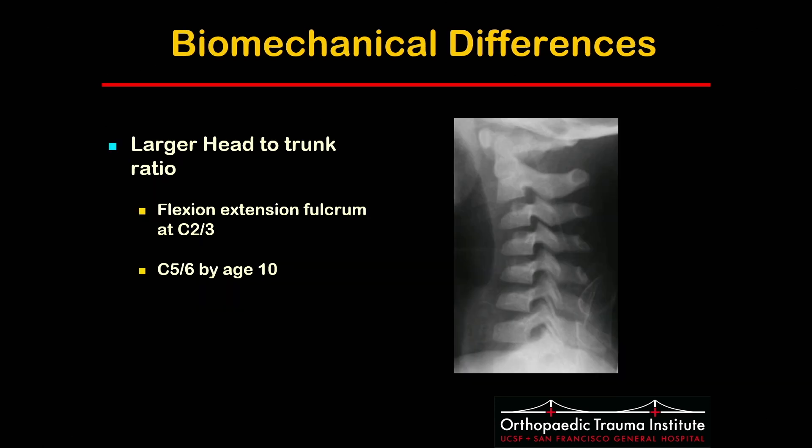Due to the larger head-to-trunk ratio, the flexion-extension fulcrum is at C2-C3 and slowly migrates down to C5-C6 by the age of 10. This is why you tend to see more upper cervical injuries in younger patients.